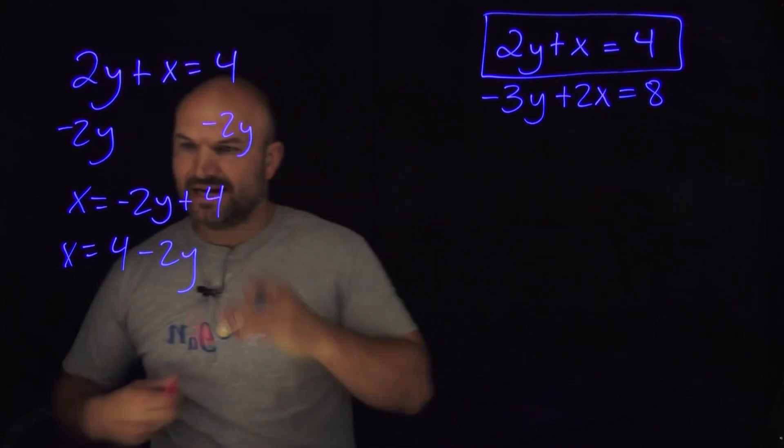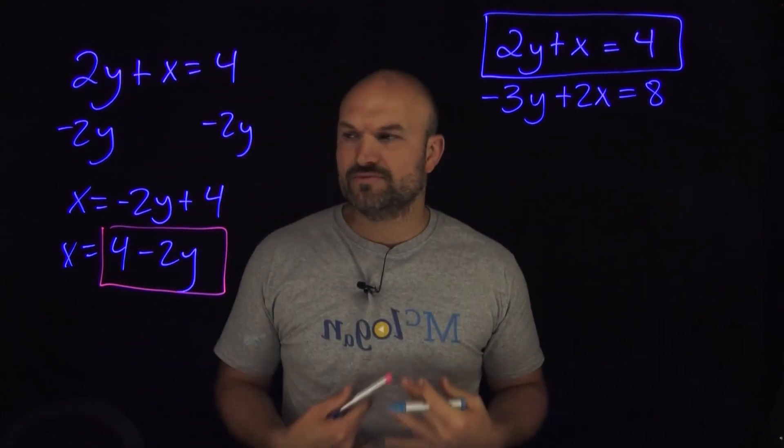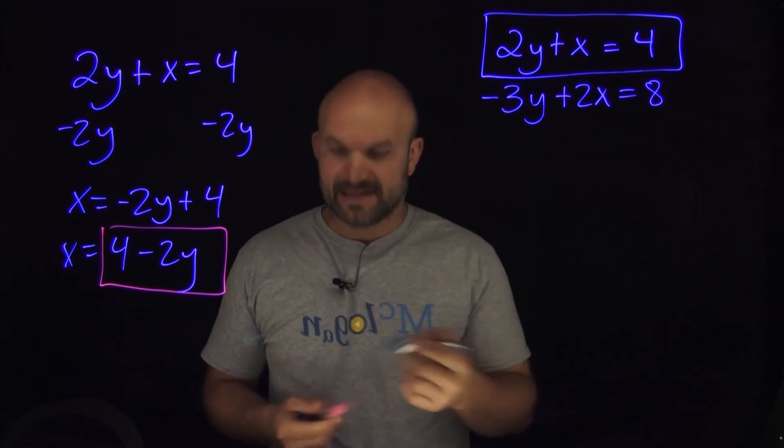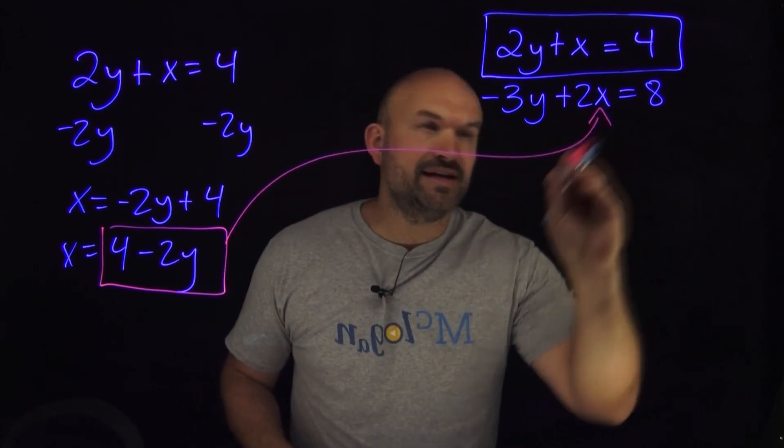Because now, what I want you to recognize here is x is equal to 4 minus 2y. Again, what does that tell us when we're trying to do substitution? Well, what that is telling us is we can take that value, what is in for x, and solve it in for x right here.